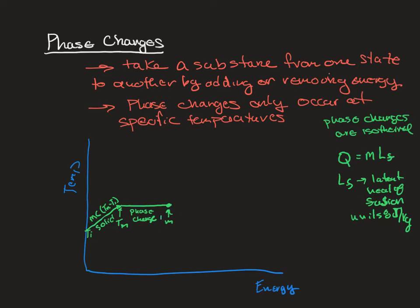Once the phase change has occurred, energy can go back into changing the temperature of the substance. Here we're in the liquid phase and we use Q = mcΔT, with the temperature rising up to the boiling point. Note that for many substances, the specific heat of the solid and the specific heat of the liquid are different — for example, ice and water have two different specific heats listed in the textbook table.